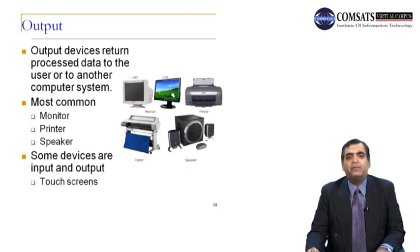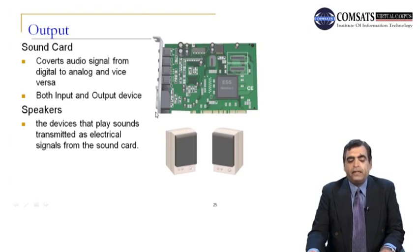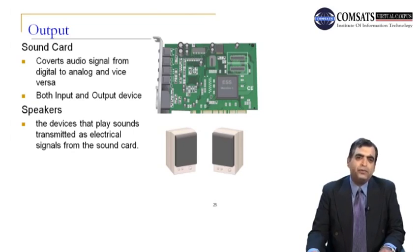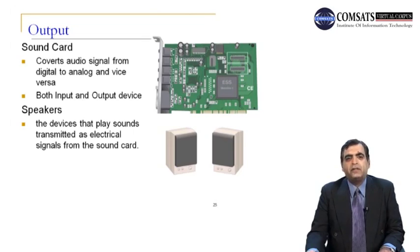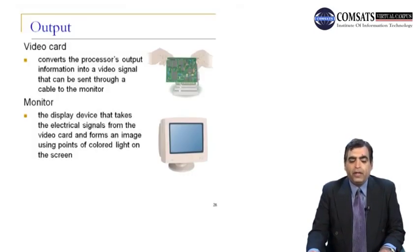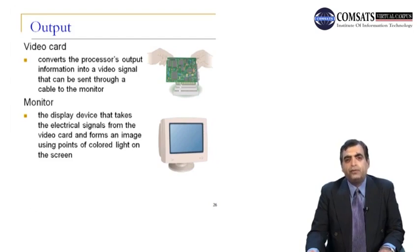A sound card is another output device. It converts audio signals from digital to analog and vice versa. For taking input, it takes sound as an analog signal and converts it to a digital signal for use in the computer. For output to speakers, it converts the digital signal into analog form. Speakers are devices that play sound transmitted as electrical signals from the sound card. Video cards convert the processor's output information into a video signal sent through a cable to the monitor. The monitor is the display device that takes the electrical signals from the video card and forms an image using points of colored lights on the screen.